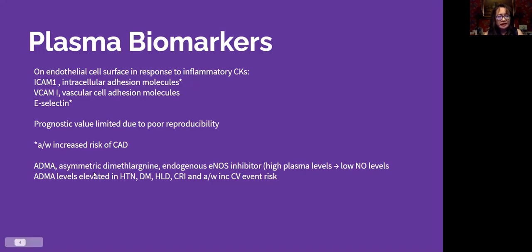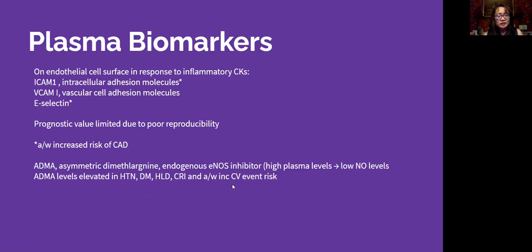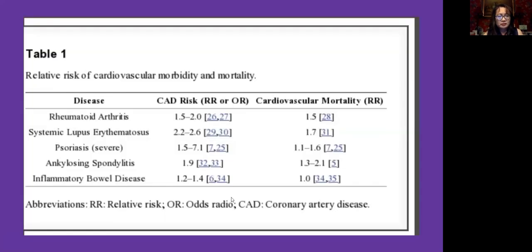ADMA — asymmetric dimethyl arginine — inhibits eNOS, and when plasma levels are high, nitric oxide levels are low. They found that in hypertension, diabetes, hyperlipidemia, and chronic renal insufficiency, ADMA levels are elevated and are associated with increased cardiovascular event risk. That's what was available prior to 2014.